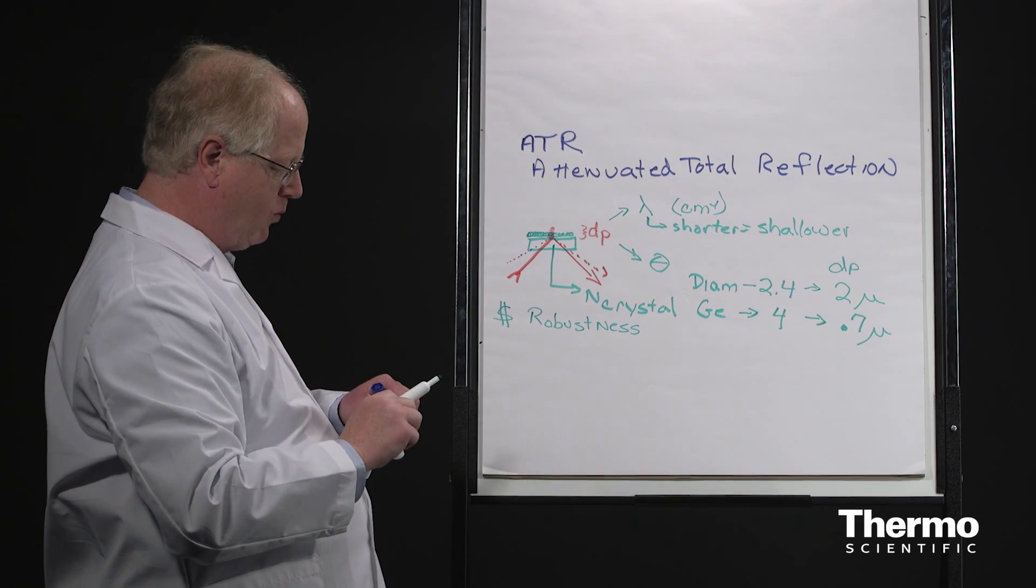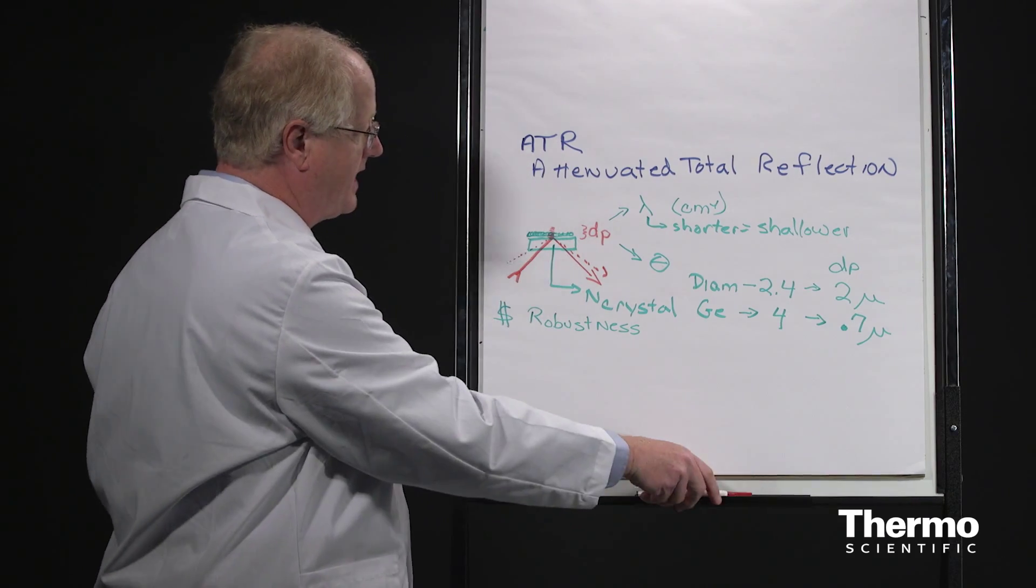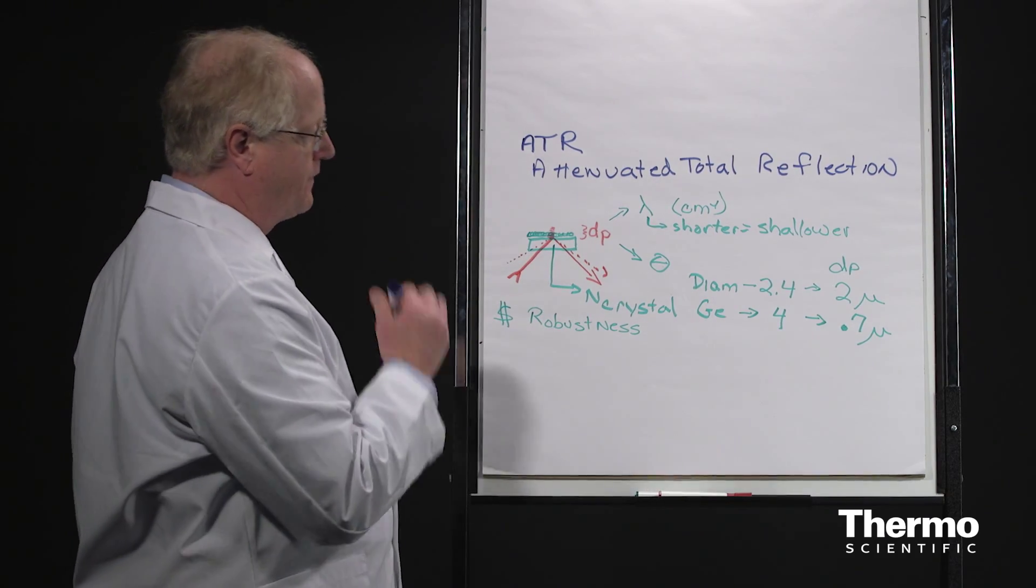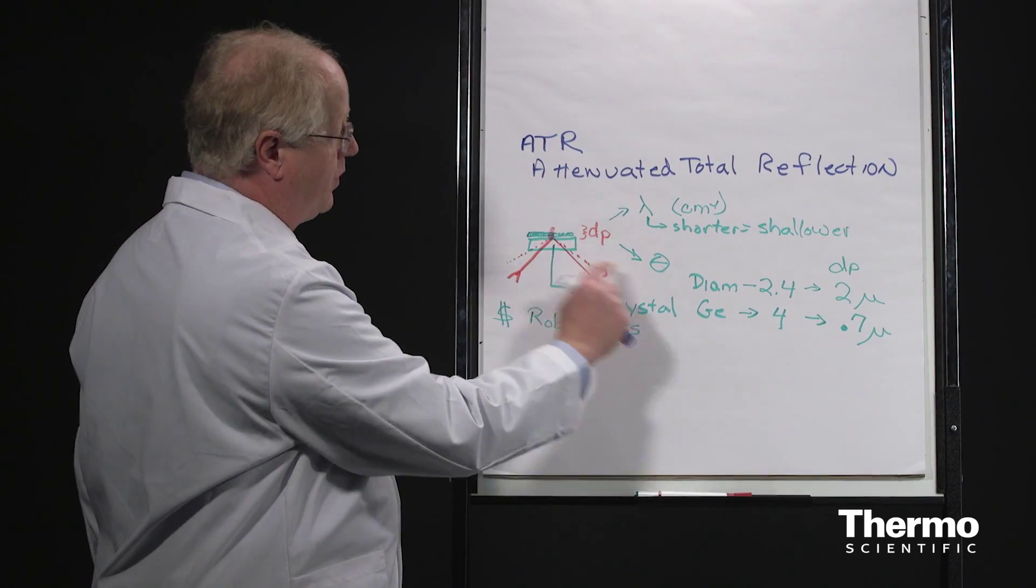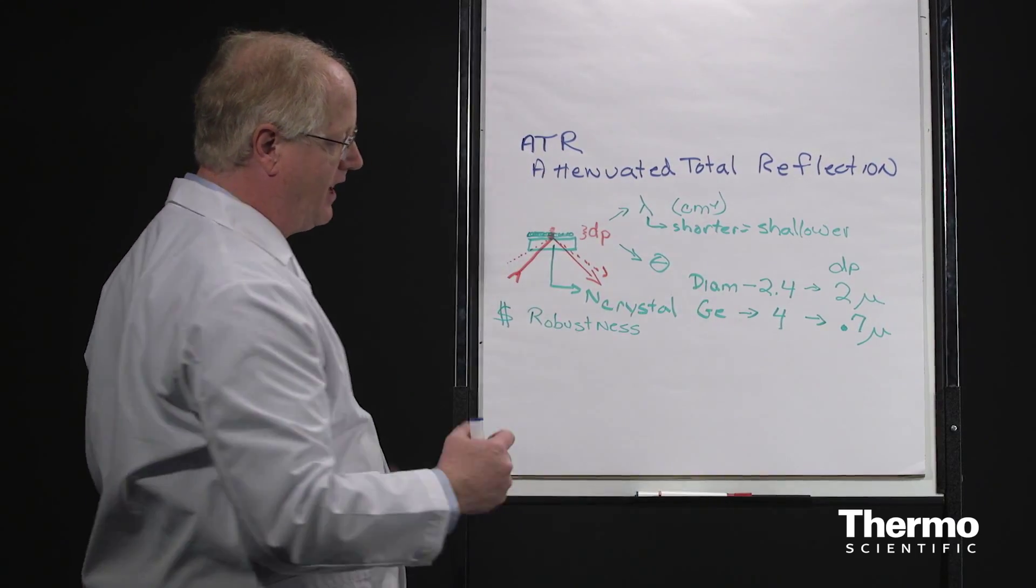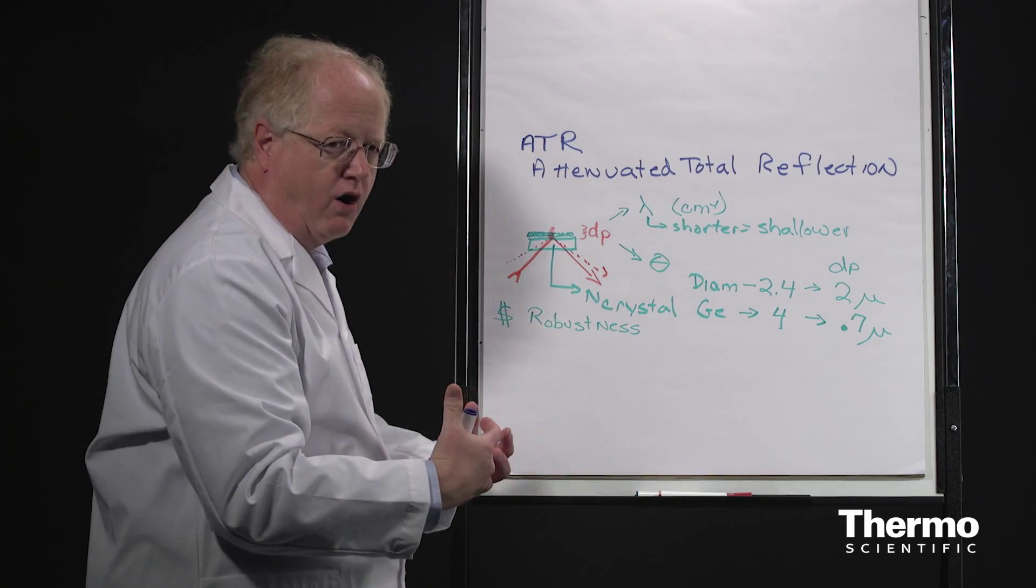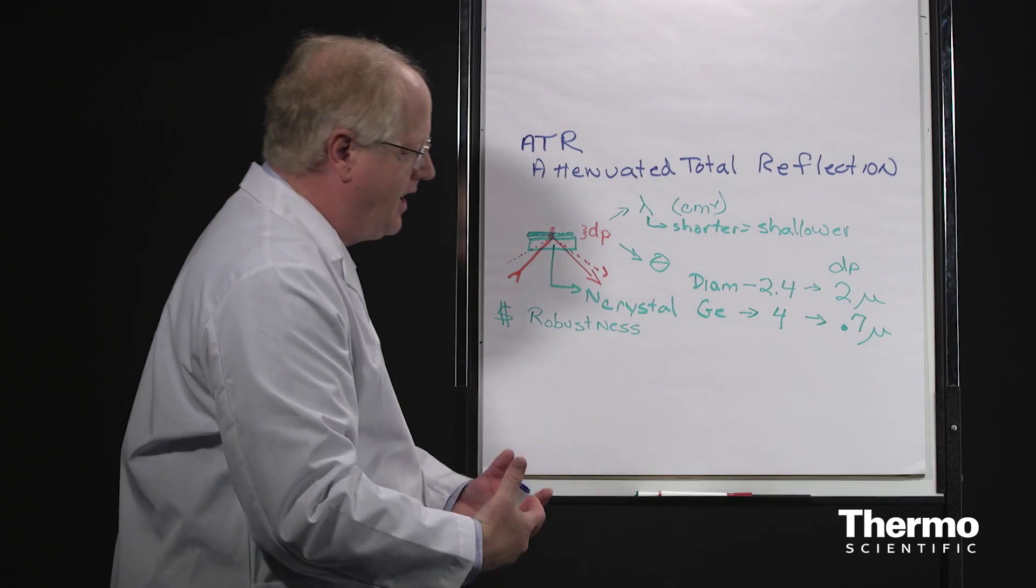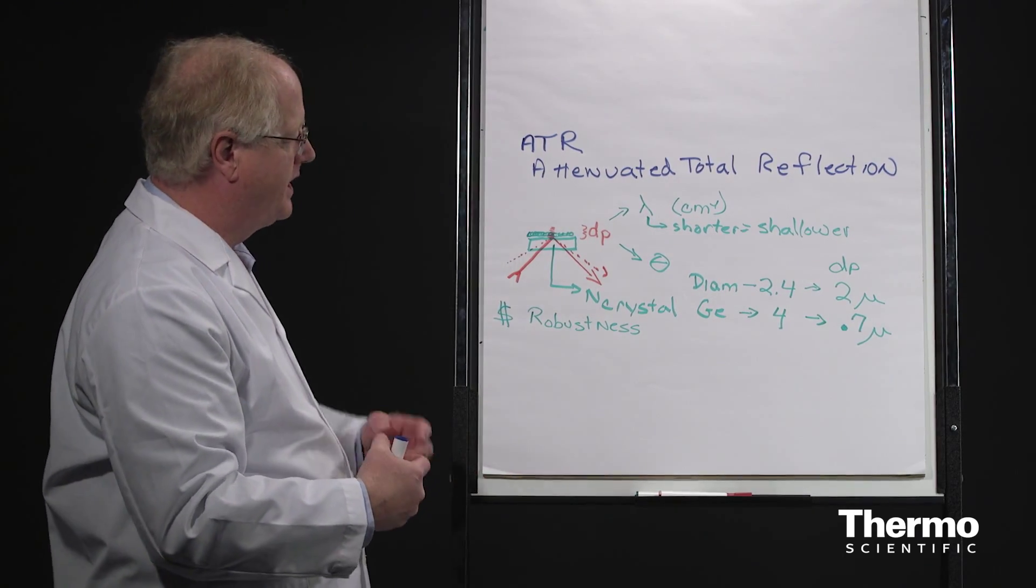When we think about the critical things that matter when you're using an ATR, the first thing is going to be the depth of penetration. You want to know whether or not you're going to have a lot of sample or a little, and whether it's going to be in good contact with the surface. That's the real critical first thing.